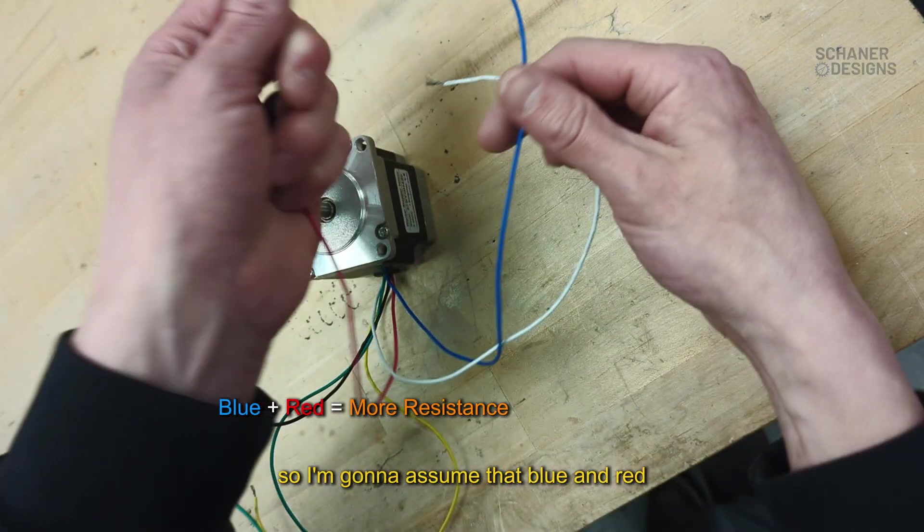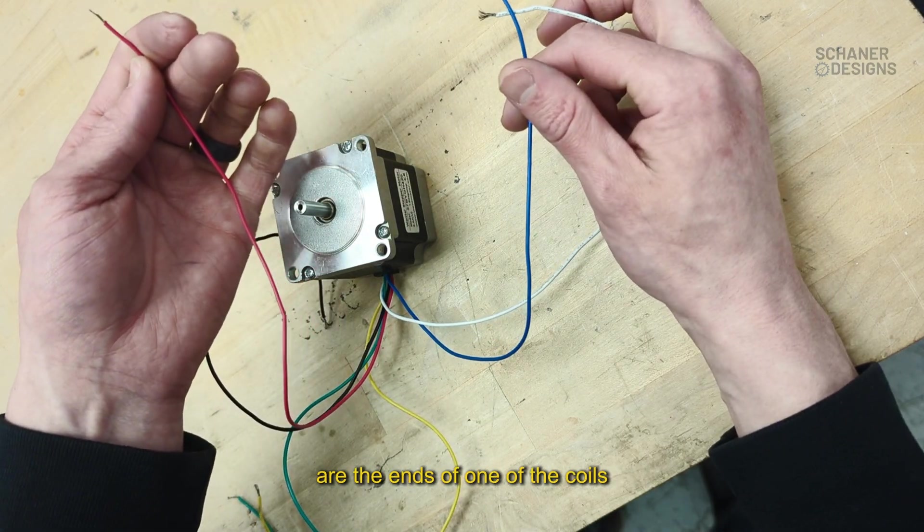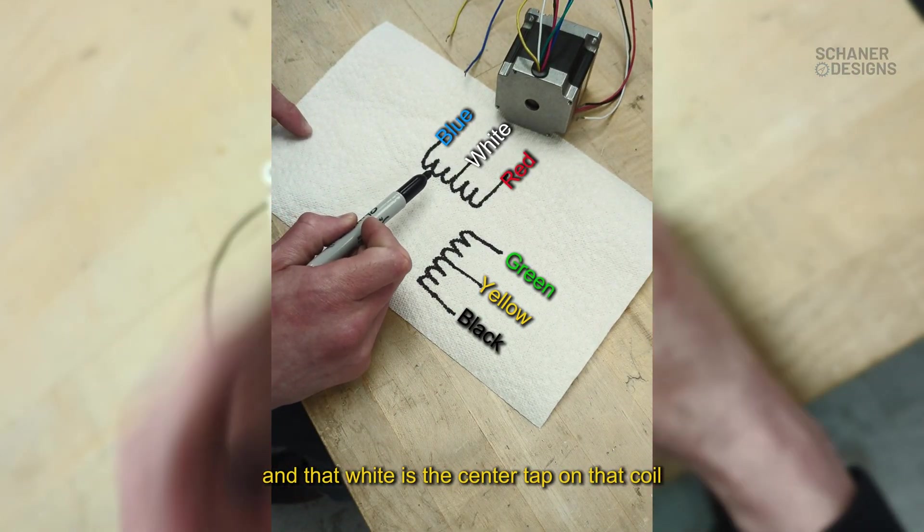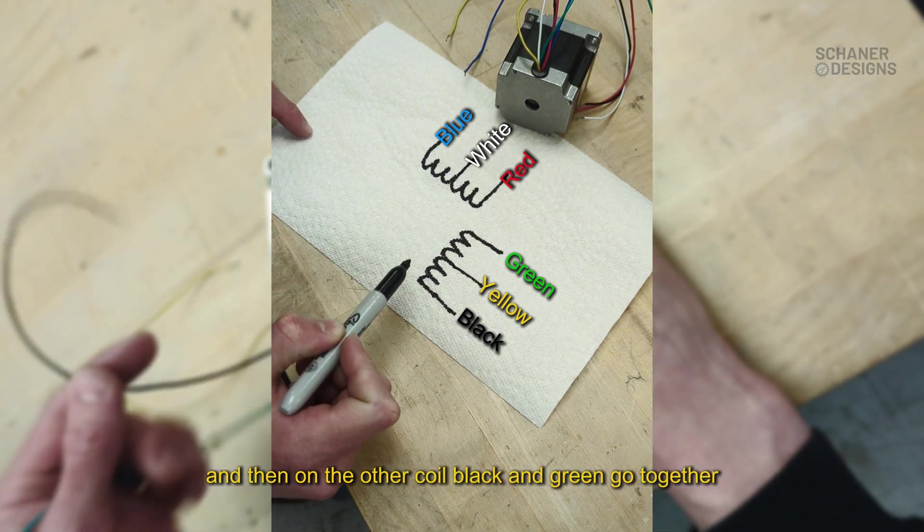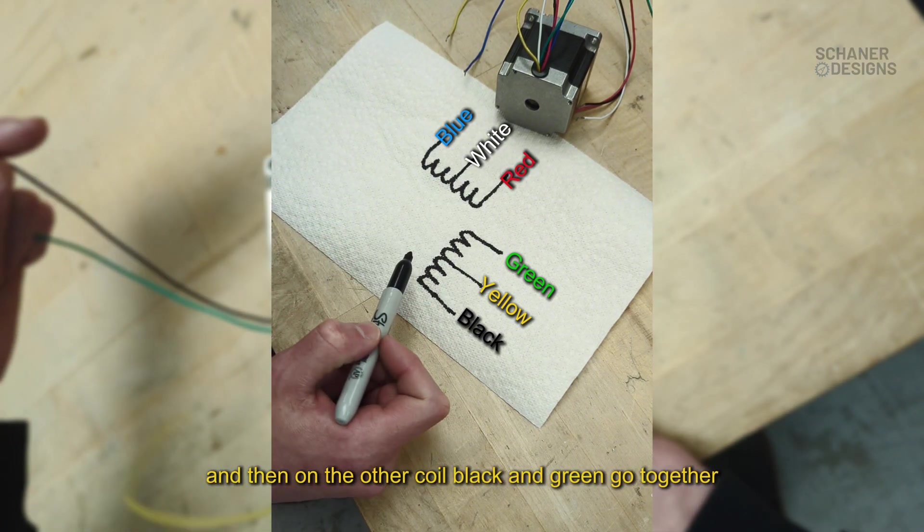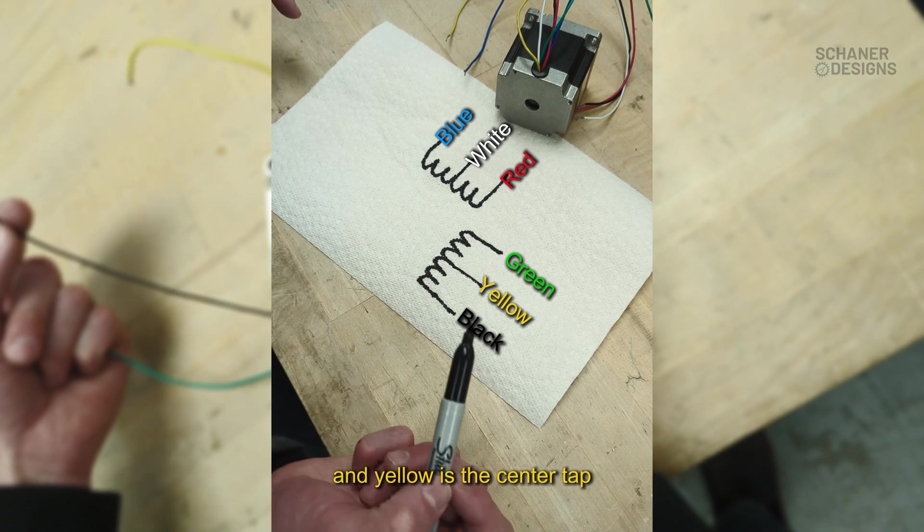I'm going to assume that blue and red are the ends of one of the coils and that white is the center tap on that coil. On the other coil, black and green go together—those are the ends of the coil—and yellow is the center tap.